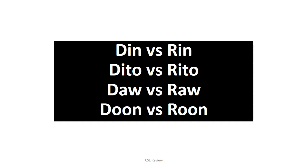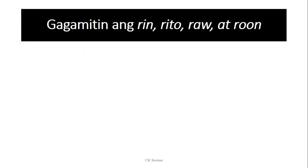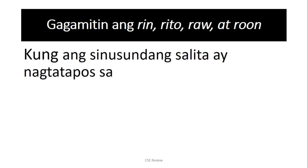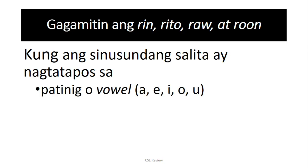Ang rules natin go like this: gagamitin mo ang rin, rito, raw, at roon — yung mga may R — for words kung ang sinusundan nila ay natatapos sa either patinig or vowel. You have A, E, I, O, U.